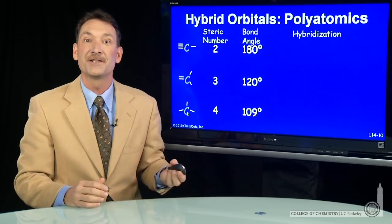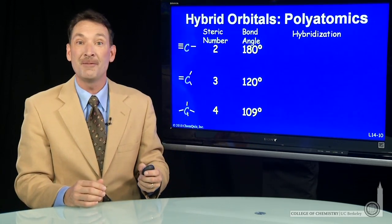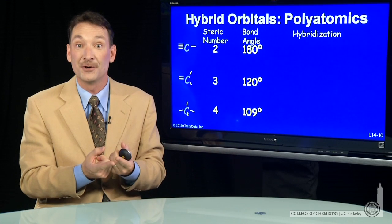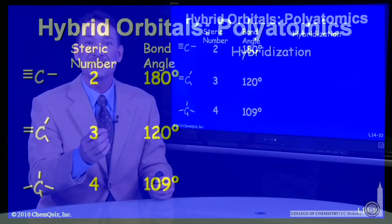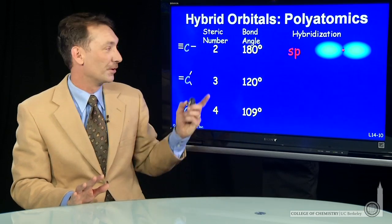That's what I do for steric number two. If I have to accommodate a bond at 180 degrees, then I'll hybridize together an S and a P, making two equivalent SP hybrid orbitals. They're at 180 degrees from each other. Here, I've drawn them with their negative lobes obscured, so each of these positive lobes is one of the SP orbitals.